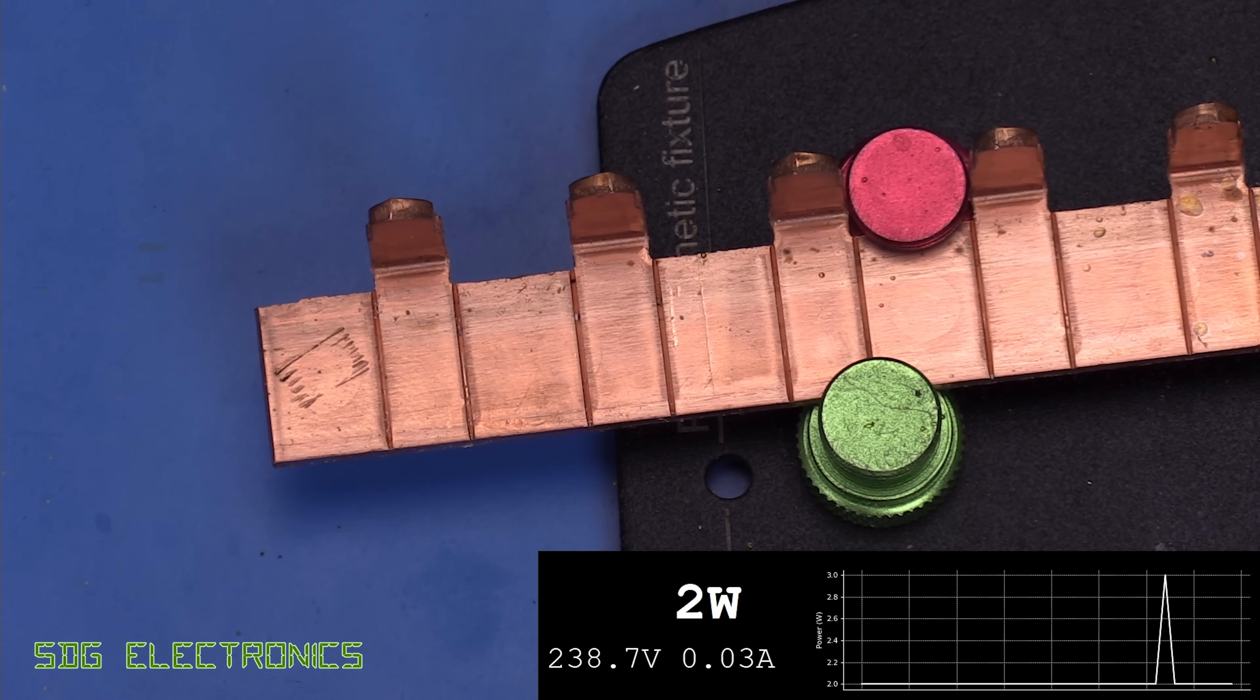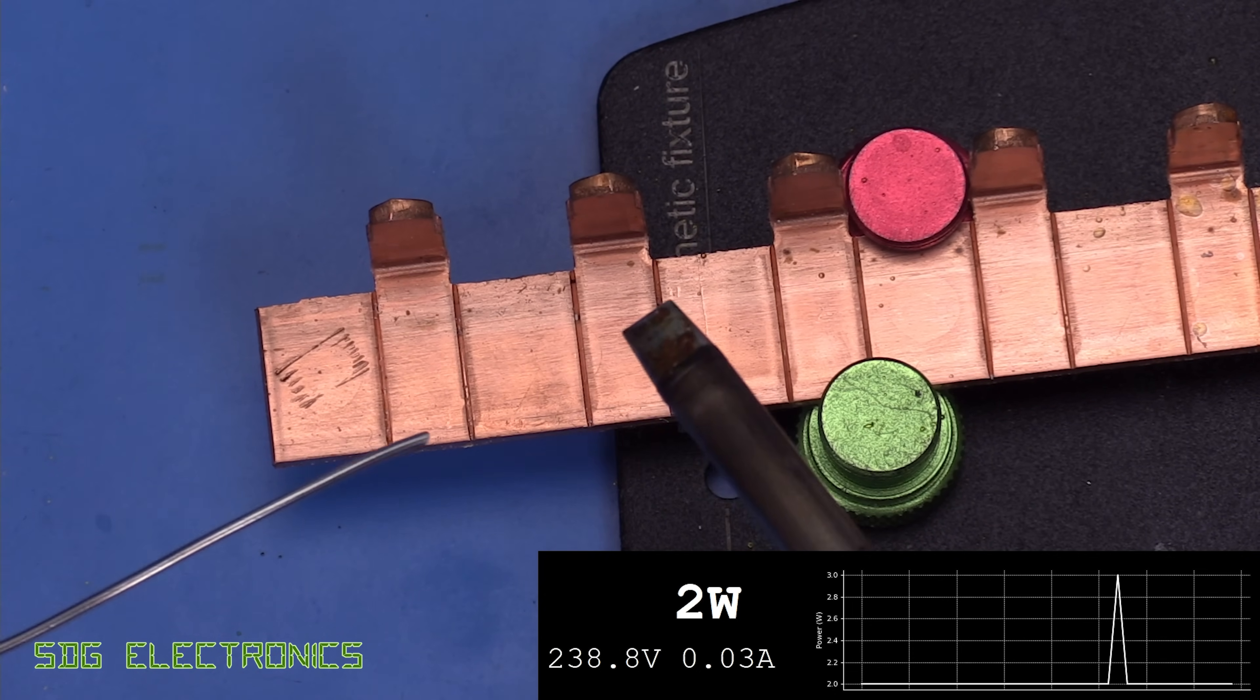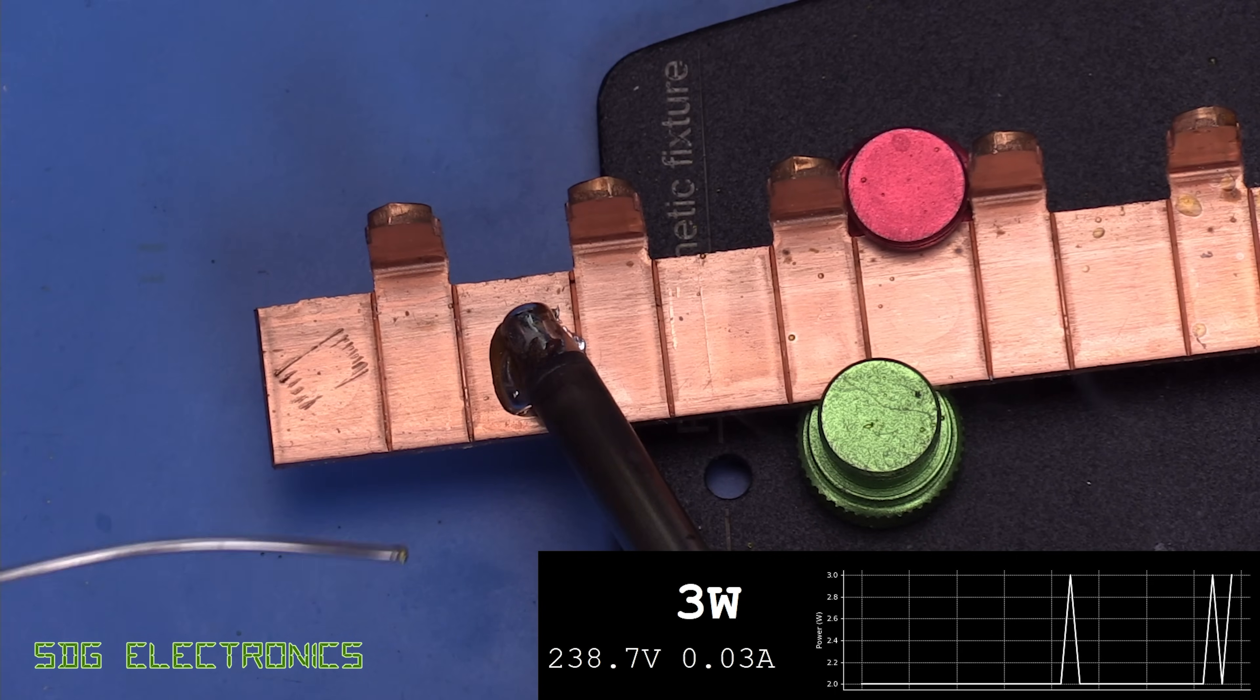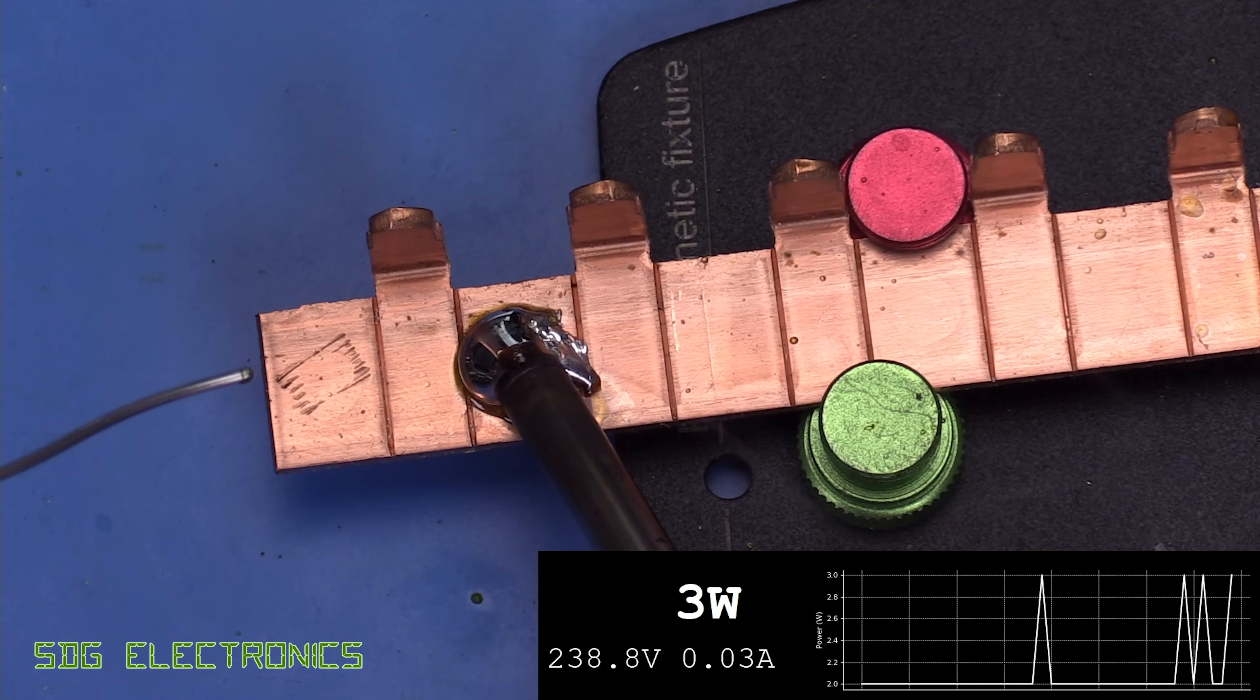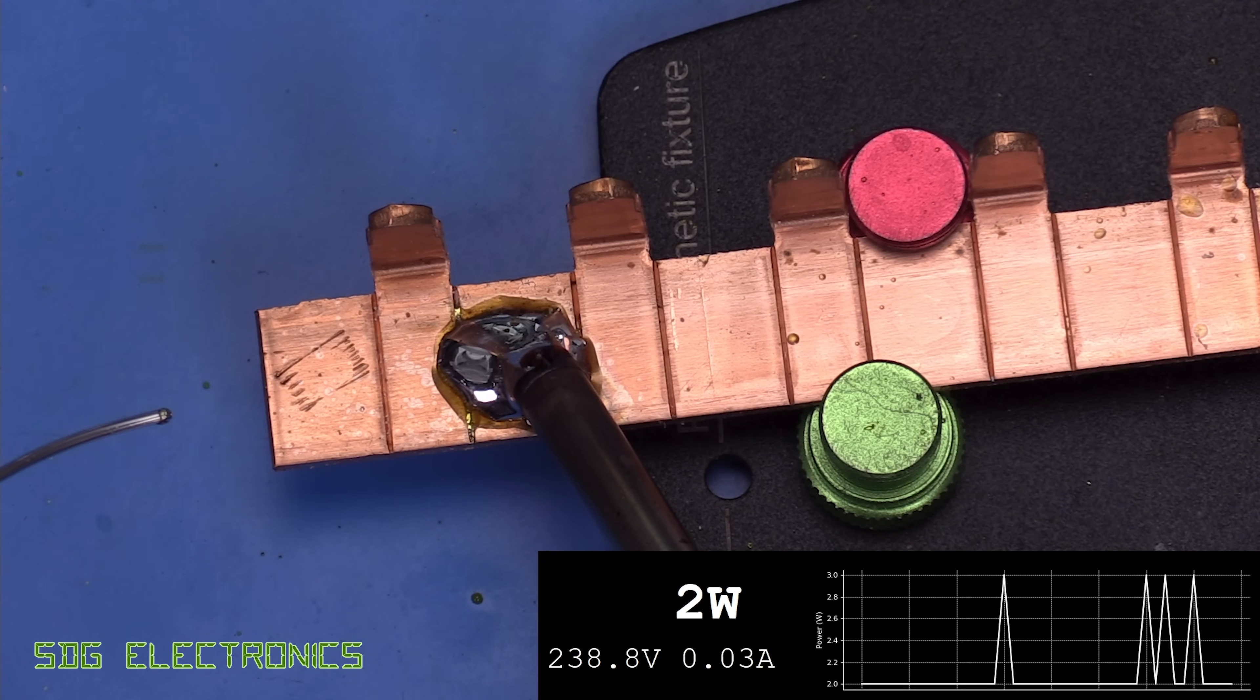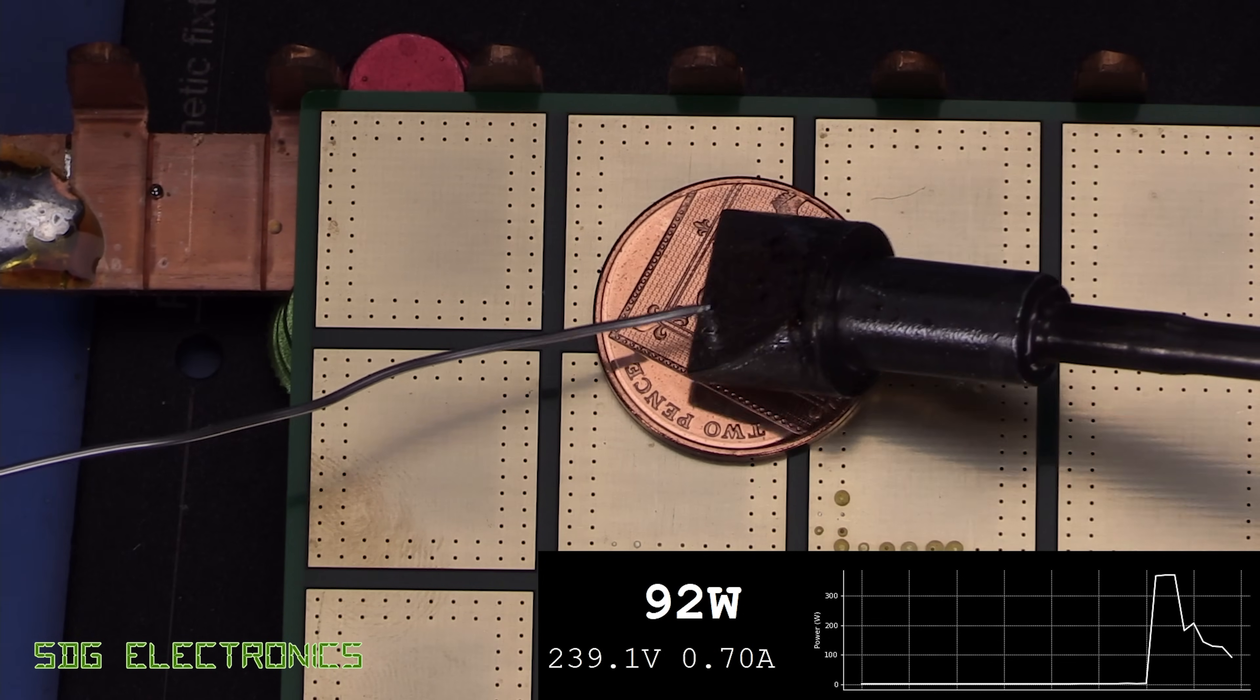Pretty amazing stuff really. I think this might be the first one that outperforms the Metcal. I haven't got the power meter hooked up to it, but here is the Metcal with the large power delivery tip here. And although this does heat up, this copper bar doesn't quite have the same performance as that huge tip with all of that power behind it.